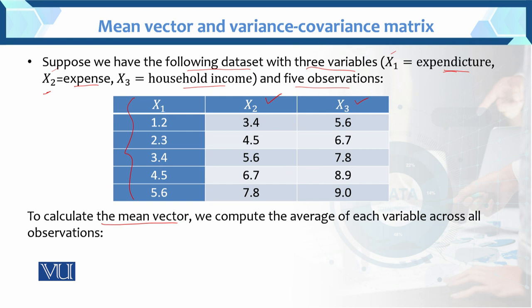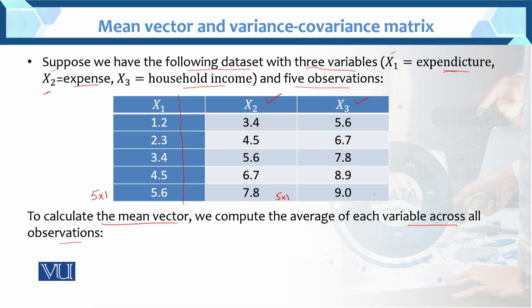One more point: to find the mean vector, we compute the average of each variable across all observations. If I take a single column, that is called the vector. And collectively it becomes the matrix. What are the dimensions of a single column vector? We have five rows and one column — that is the vector.